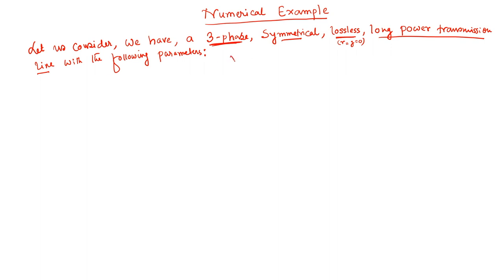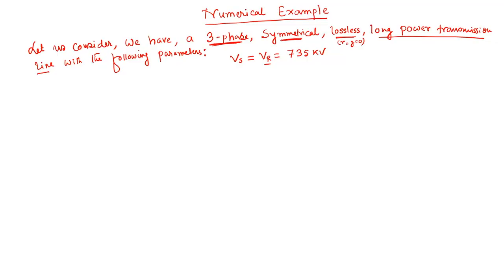The parameter values given are: Vs magnitude = Vr magnitude = 735 kV. Vs is the sending end voltage and Vr is the receiving end voltage. When the sending end and receiving end voltages are equal, the line is called a symmetrical line. The frequency is given as 60 Hz. If frequency is not given, you can assume 50 Hz. In India we use 50 Hz, but in the USA the power frequency is 60 Hz.